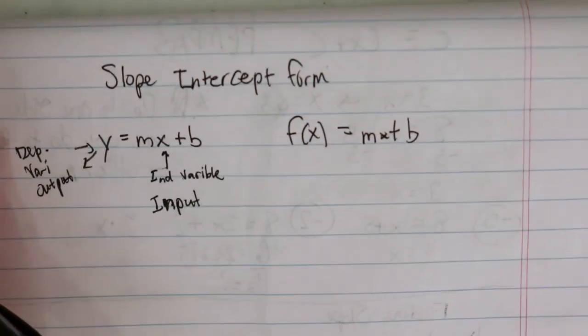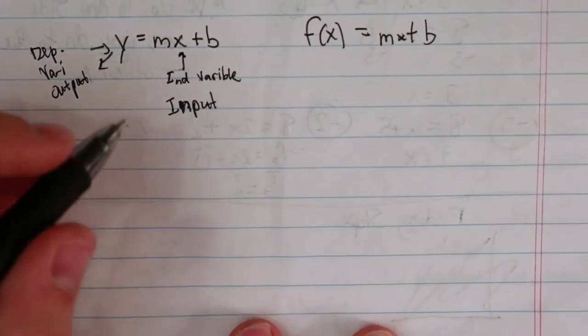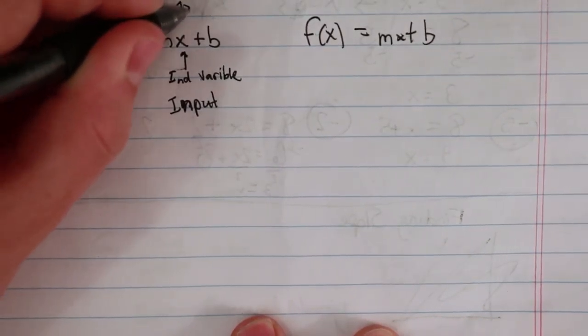And remember, you test for functions using the vertical line test. When y equals mx plus b, the m equals the slope.